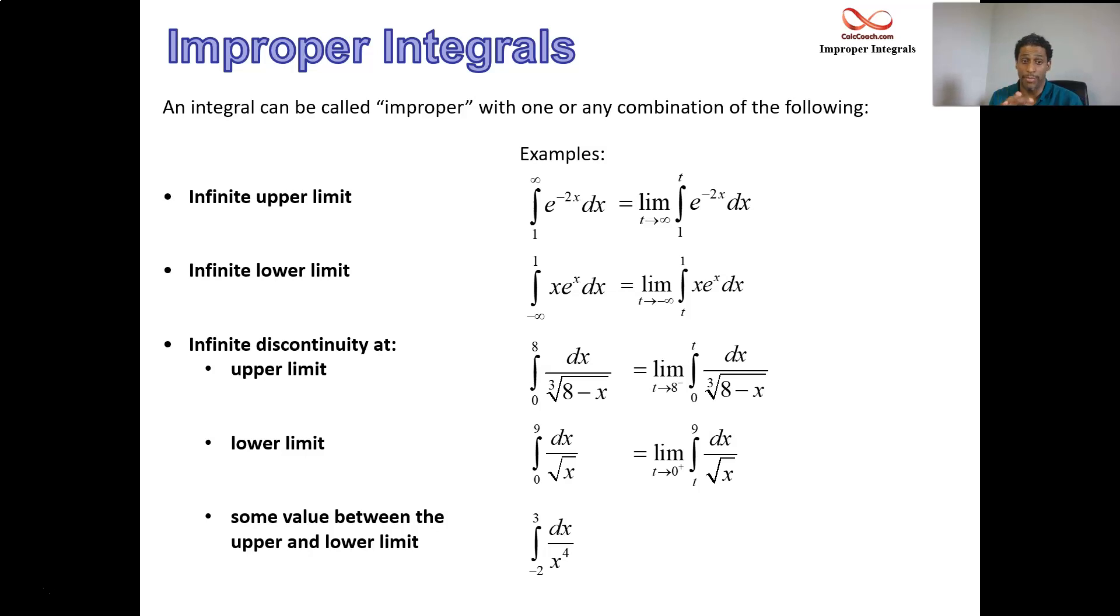Now when it comes to the infinite discontinuity being in between, you actually have to break it into 2. You have to go from negative 2 to 0, then go from 0 to 3. And on the 1, you'll be approaching 0 from the left. On the other, you'll be approaching 0 from the right.